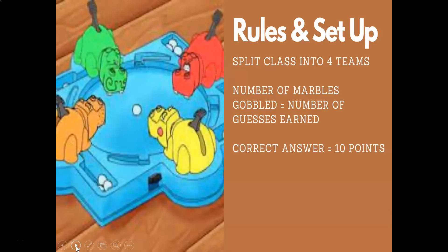The basic rules are: gobble as many marbles as you can. The number of marbles gobbled is how many guesses a team can take toward a vocabulary question. If team red gets four marbles, they have four guesses at the question. Getting it correct is worth 10 points. Rules can be somewhat flexible — kids love to make up their own rules, rules change as we play, so just have fun with it and make it work for your class size, maturity, and group dynamics.